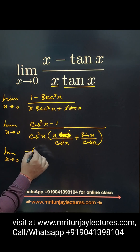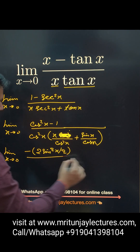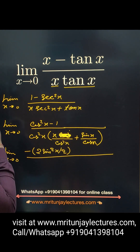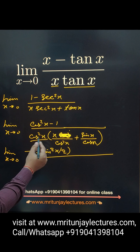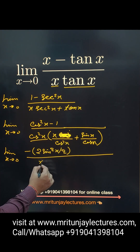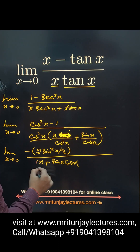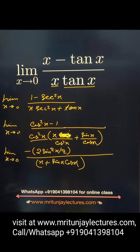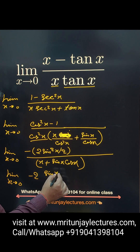So numerator is minus 2·sin²(x/2). For the denominator, taking 1/cos²x common, then cancelling, we get x plus sin(x)·cos(x). Now taking x common in the denominator, we write it as x·[1 plus sin(x)/x·cos(x)], and in the numerator we handle sin(x/2) divided by (x/2) multiplied by 2.